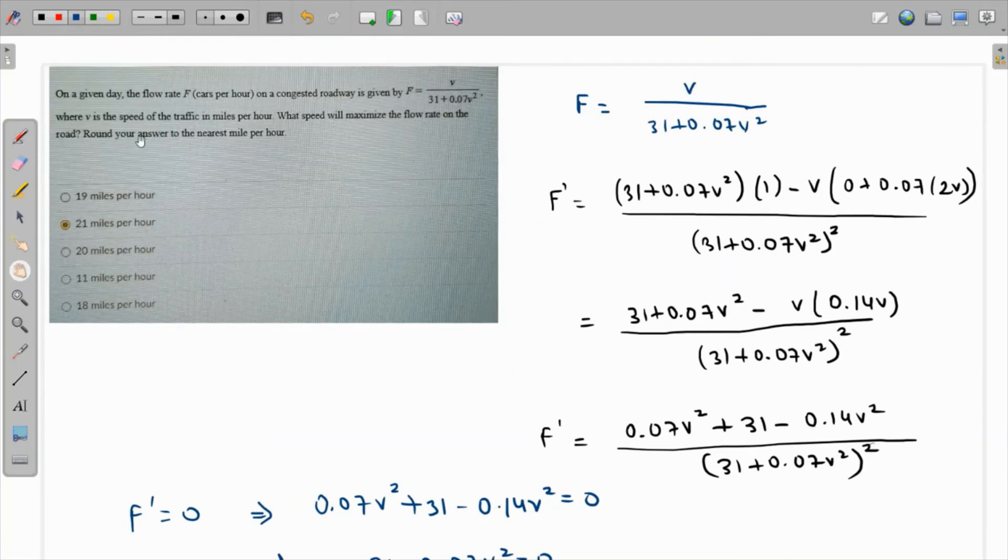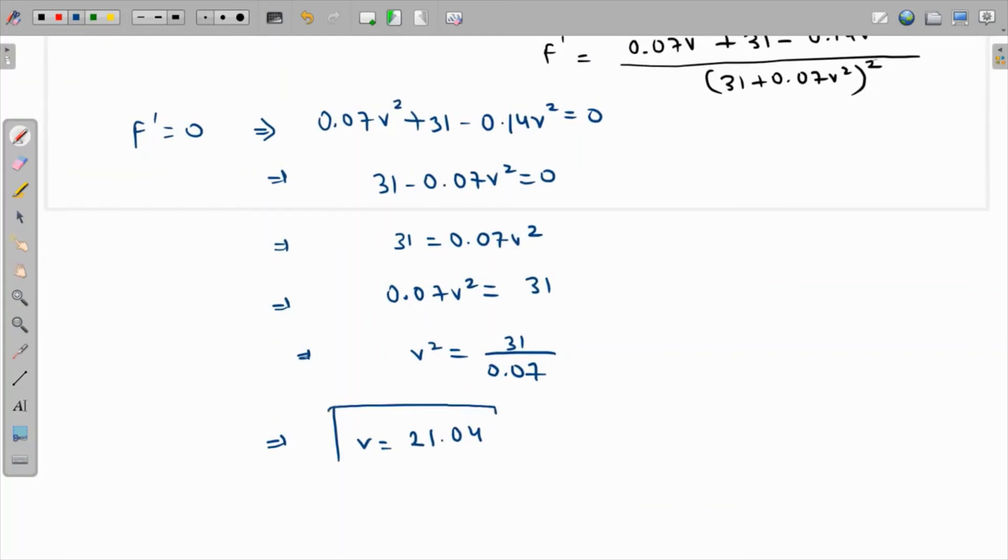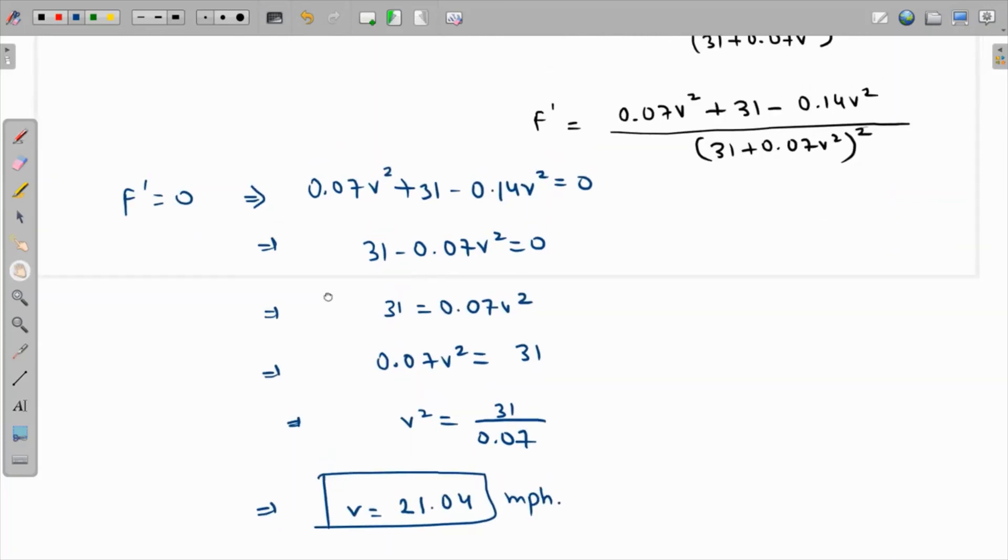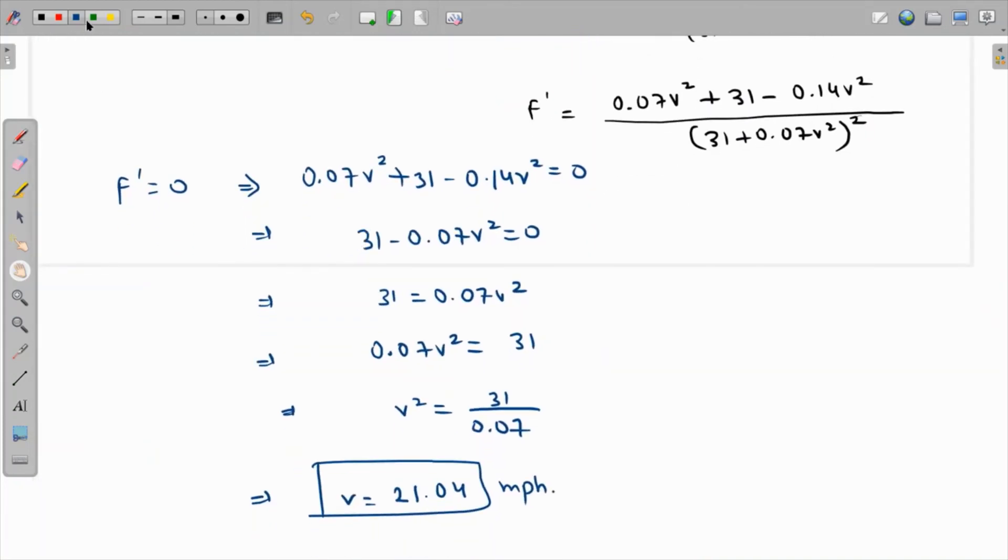To the nearest mile per hour, the answer is 21 since we're getting 21.04 miles per hour. To verify it's a maximum and not a minimum, we can substitute values around this point. If we plug in 20, F' is positive, and at 22, F' is negative. Positive to negative ensures this has a local maxima.